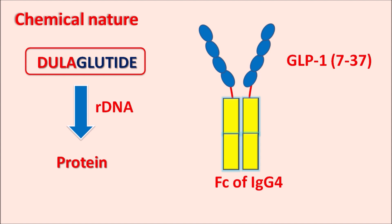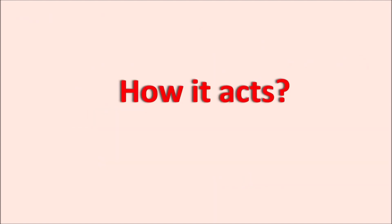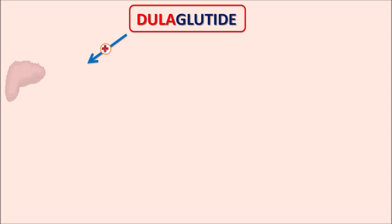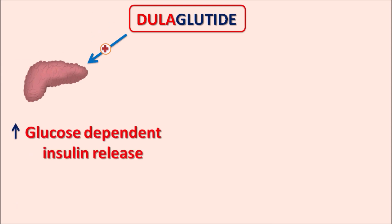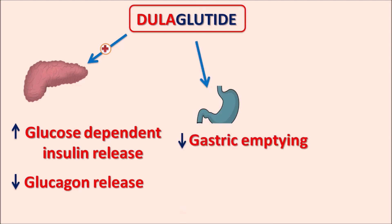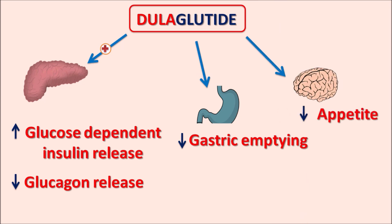Because of its structural similarity with GLP-1, Dulaglutide can act as an incretin and reduce both fasting and postprandial blood glucose levels. Dulaglutide controls glucose levels by different mechanisms. Its primary site of action is the pancreas — it stimulates glucose-dependent insulin release from beta cells and inhibits glucagon release from alpha cells. It also acts on the stomach to reduce gastric emptying, which delays glucose absorption, via an inhibitory effect on the vagus nerve. Additionally, Dulaglutide acts on the brain to reduce appetite, resulting in weight loss.